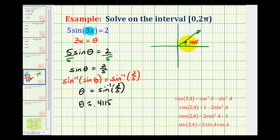The reference angle in the second quadrant would have the same sine value. So let's sketch a reference angle of 0.4115 radians in the second quadrant. It might look something like this, where the reference angle here is approximately 0.4115 radians. The second possibility for θ would be this angle.